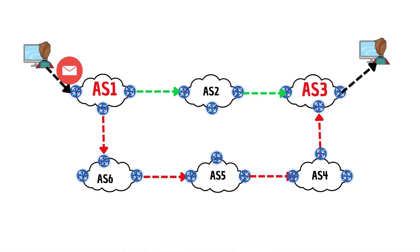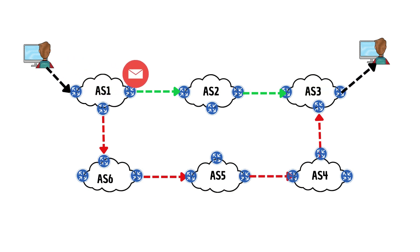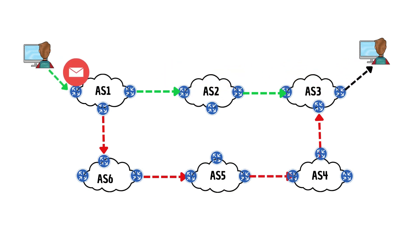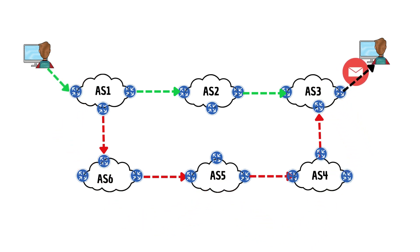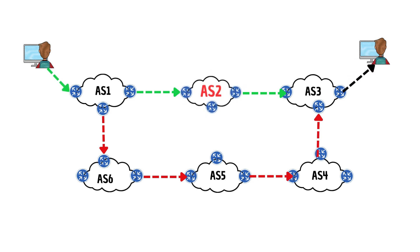The diagram here illustrates a simplified version of BGP. Here we have only six ASes connected to the internet — in real life we have thousands of ISPs and networks connected together. Let's say AS1 needs to send a packet to AS3. It has two different options: AS1 can hop directly to AS2, then to AS3; or AS1 can hop to AS6, then to AS5, AS4, and finally to AS3.